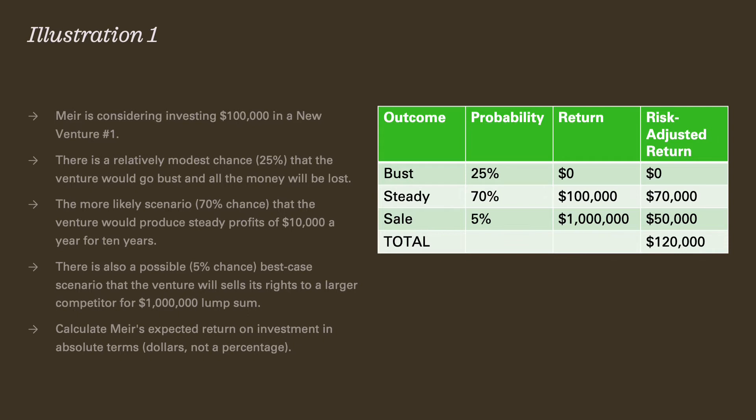So that's how much Meyer can expect to get from this investment. Note that $120,000 is not any of the actual outcomes — it represents an amalgamation of all outcomes together. It's his total risk-adjusted return. The company will either go bust, produce steady profits, or be sold, and he'll get a different actual return based on that. However, the overall risk-adjusted return is $120,000.